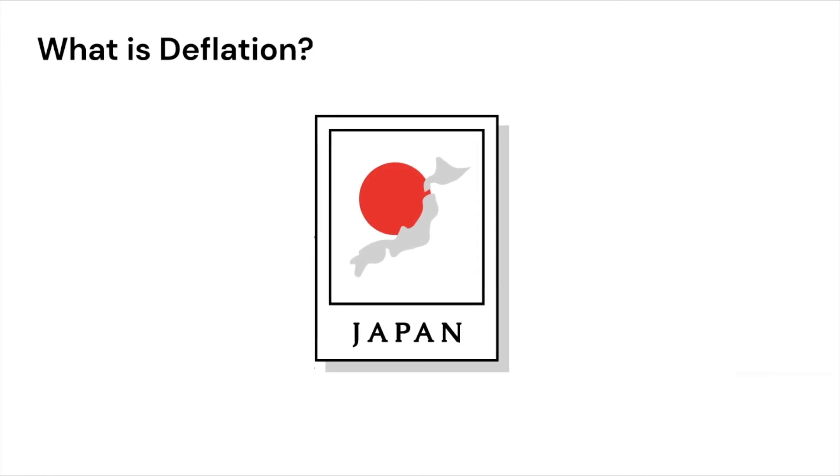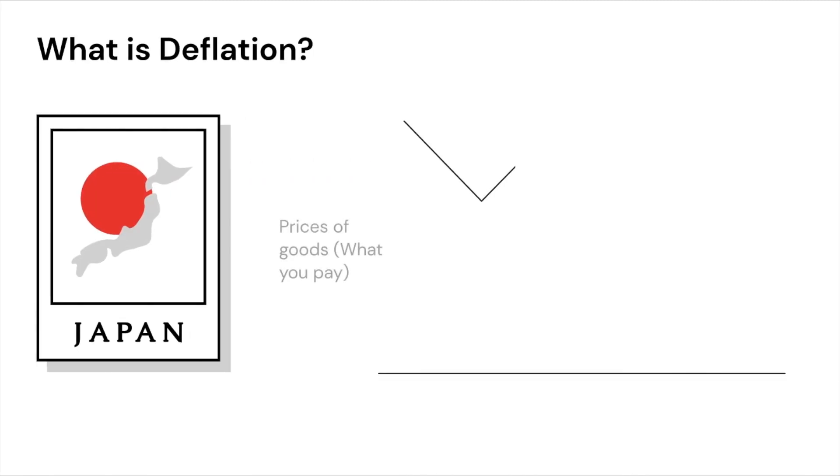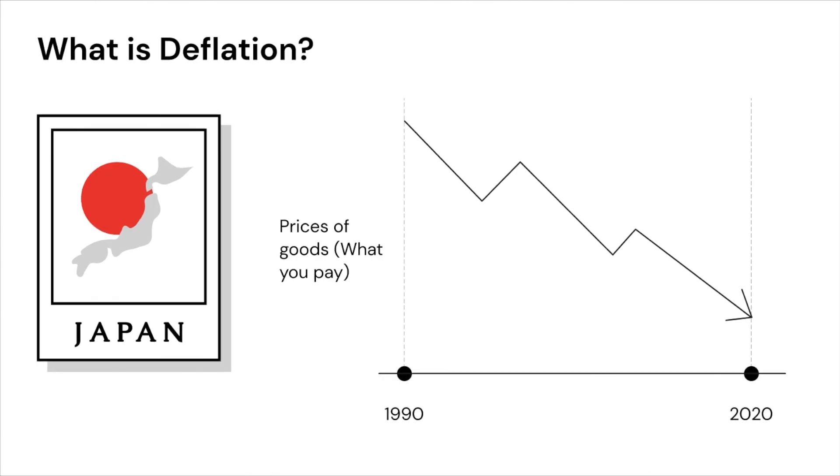Japan has been the world's poster child case study for deflation, and it has been generally in a deflationary environment for most of the period from the 90s till even now.